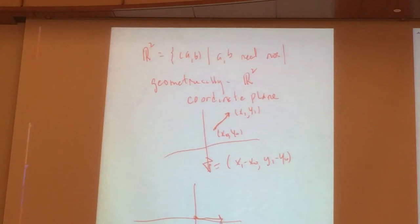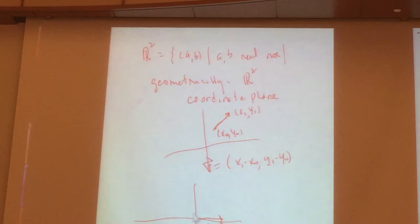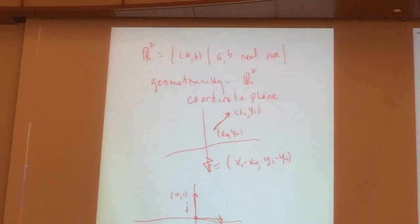And I'll look at the vector which goes from (0,0) to (0,1), and you call that vector j. Now, these two vectors are independent — they're not multiples of each other, so by our definition, we know they're independent.